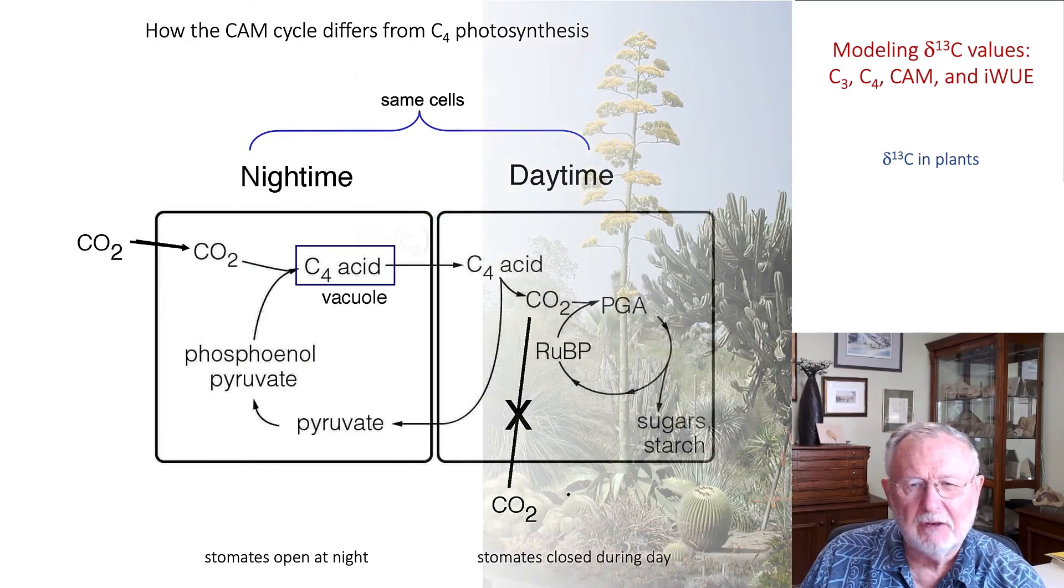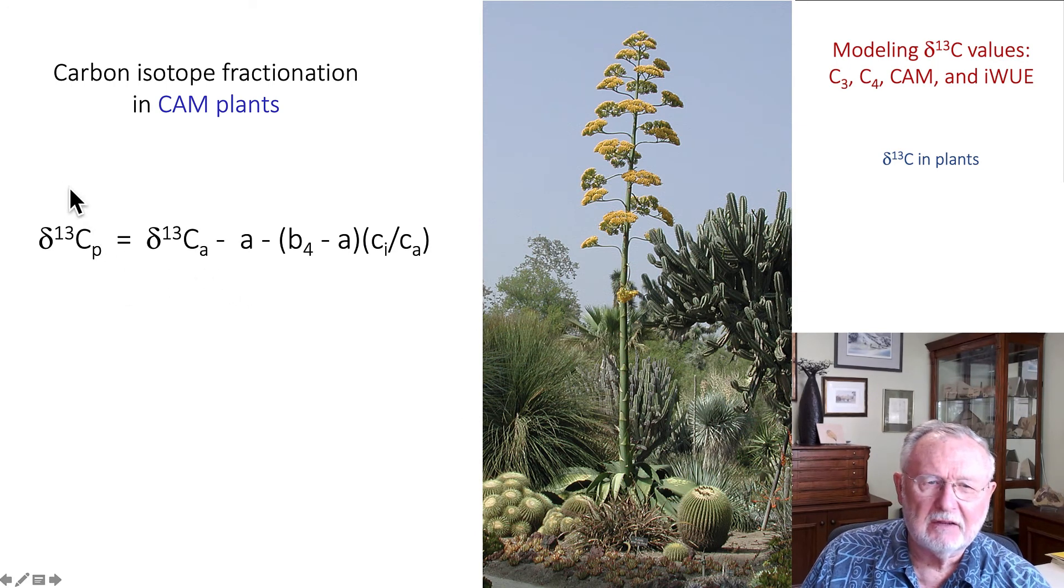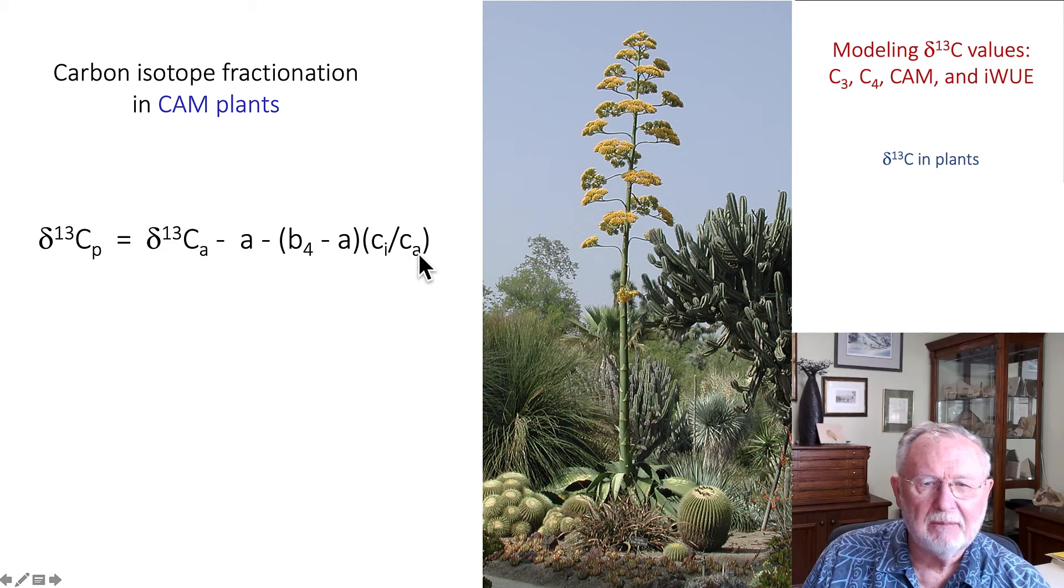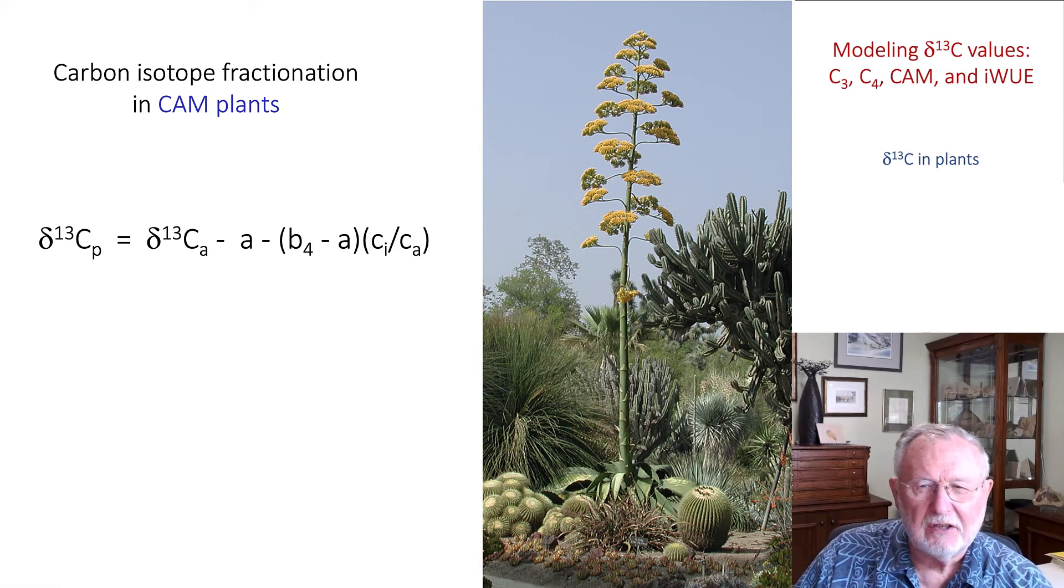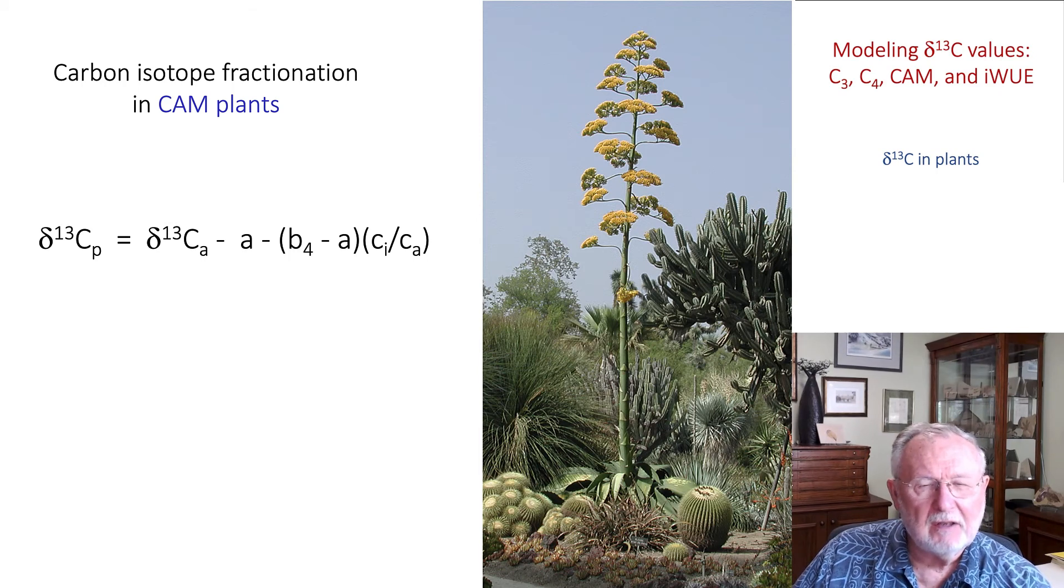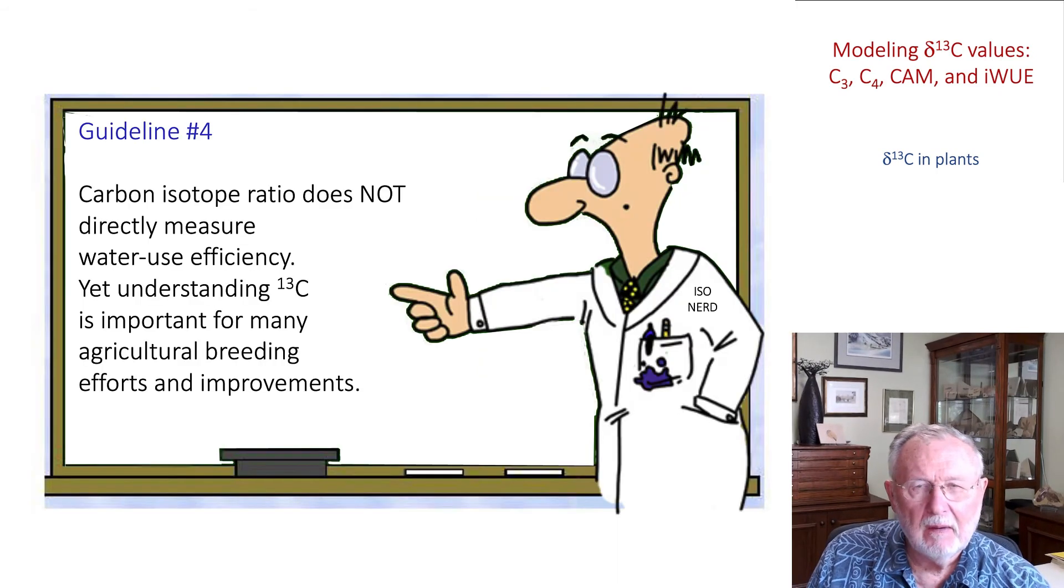That results in a very simple expression, and that is that the carbon isotope ratio of CAM plants should depend on the isotope ratio of the air, δ13C4 minus B and B4 minus A times Ci over Ca. So all the variation here that we find in CAM plants should be associated with variations in Ci/Ca as CO2 is initially diffusing in and being fixed into a C4 acid and stored in the vacuole.